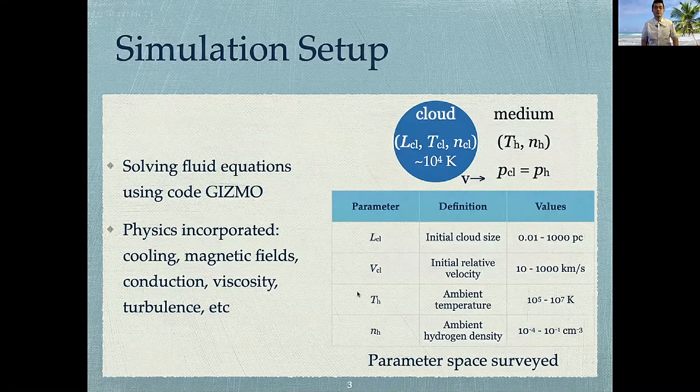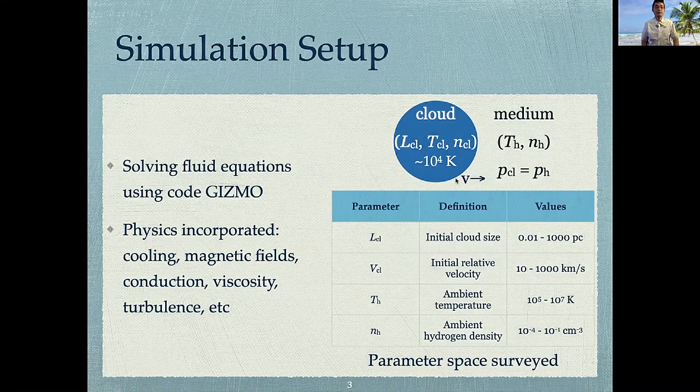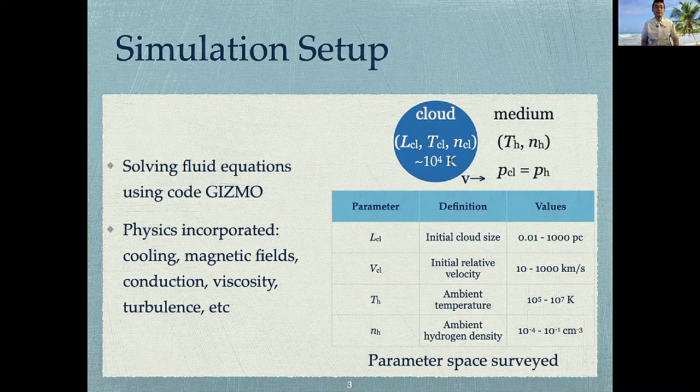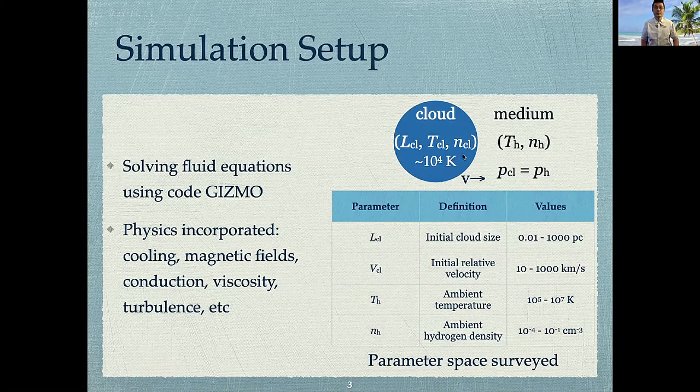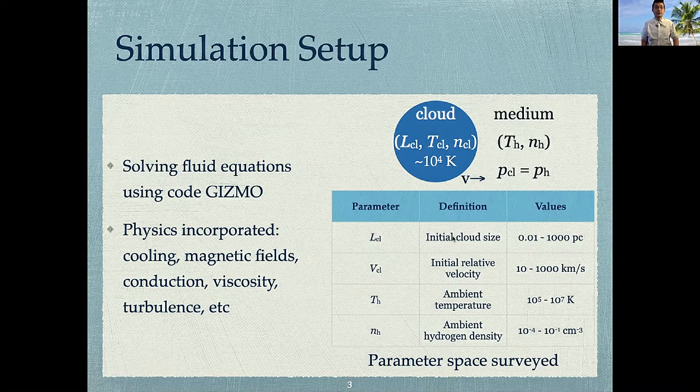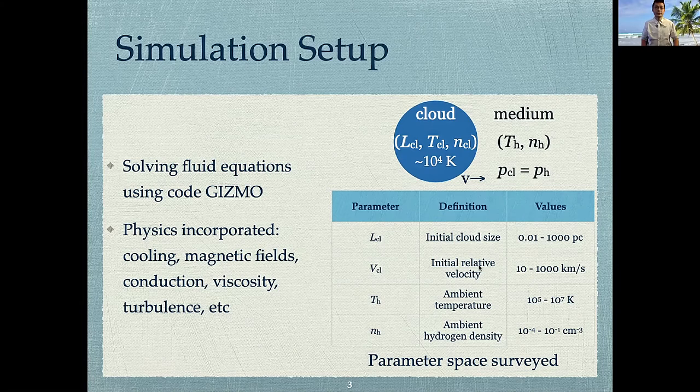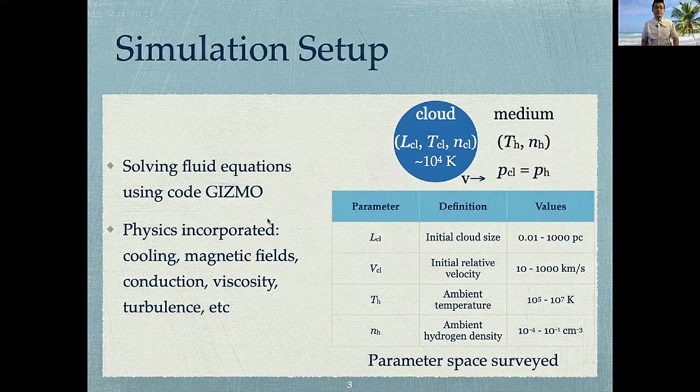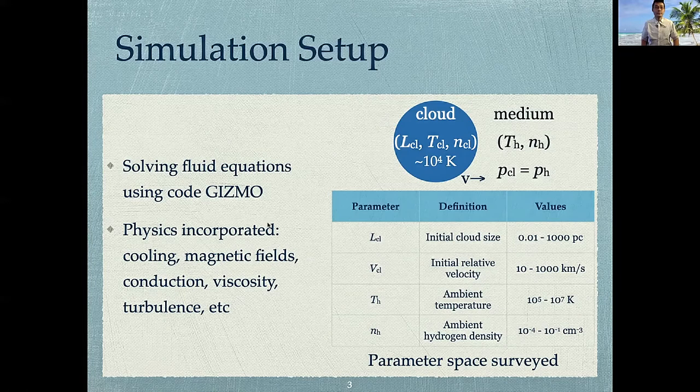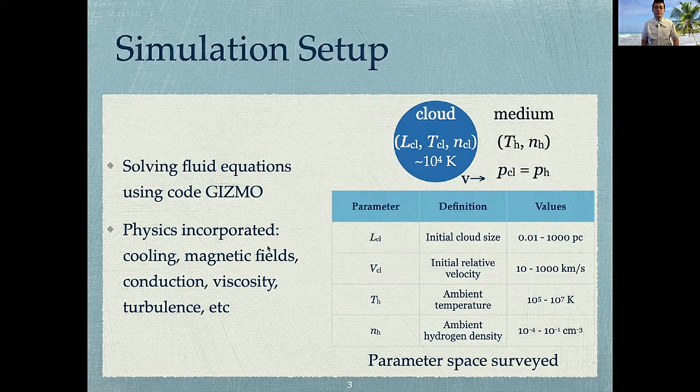So this is the brief description of our simulation setup. As shown in this figure, we put a spherical cool cloud of 10^4 Kelvin in pressure equilibrium with the hot medium. And we varied four parameters in total: cloud size, cloud relative velocity, and the ambient temperature and number density of the medium. We then solved a set of fluid equations using code Gizmo, with different physics incorporated, such as radiative cooling, magnetic fields, conduction, etc.